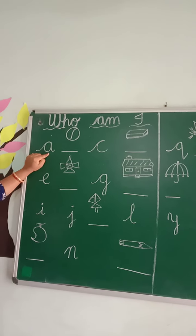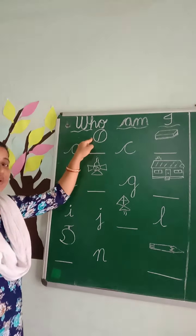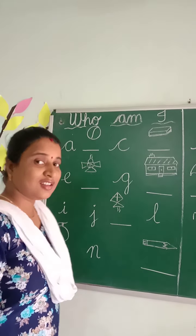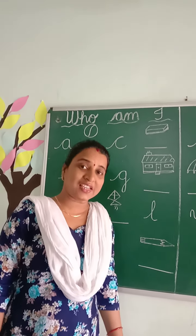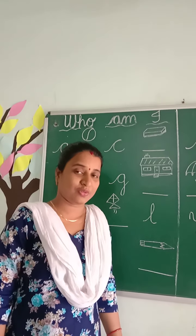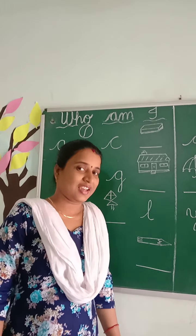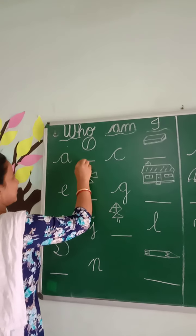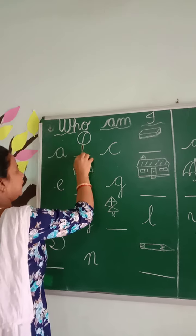Here is small cursive A. Then, which picture is this? It is a ball. And the first letter of ball is B. Small cursive B.